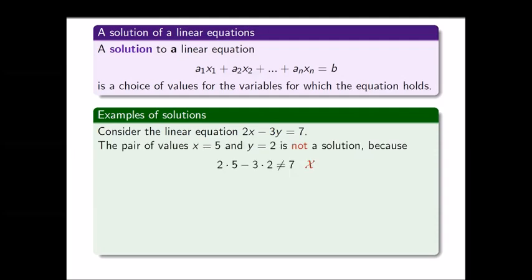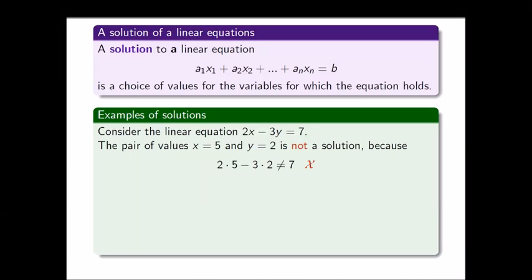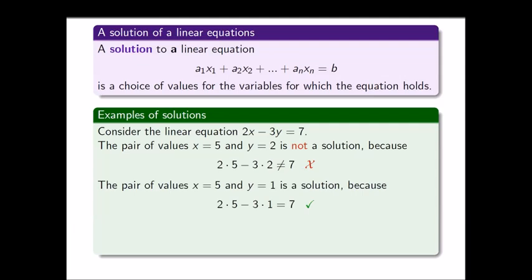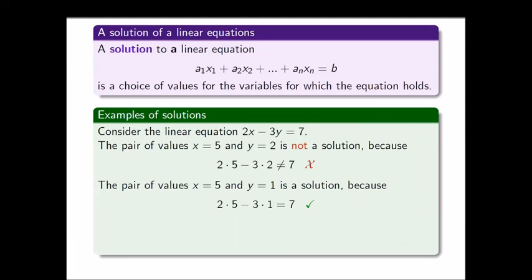If we choose x equals 5 and y equals 2, that is not a solution because 2 times 5 minus 3 times 2 is 4, and 4 is not equal to 7. So the equation is not satisfied. On the other hand, if we choose x equals 5 and y equals 1, it is satisfied because the left-hand side is 10 minus 3, which is 7.